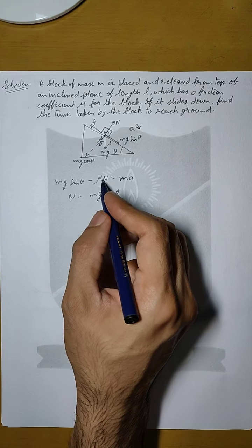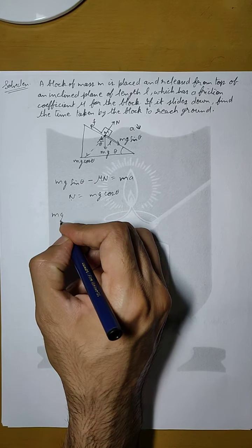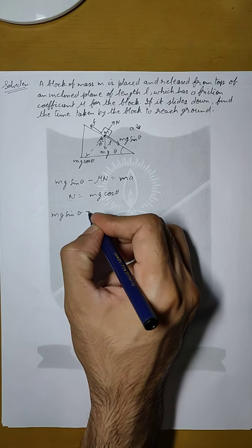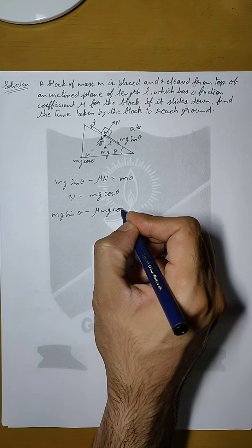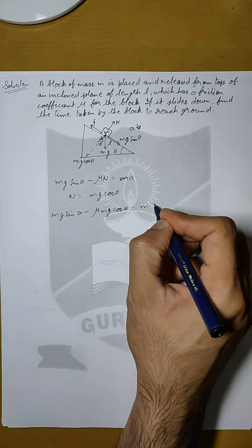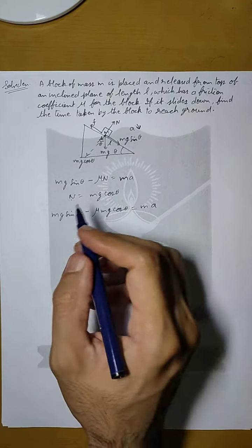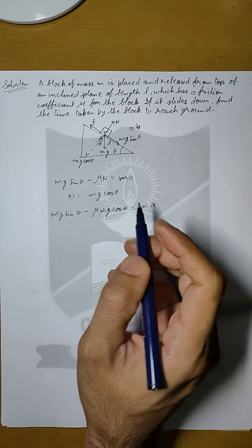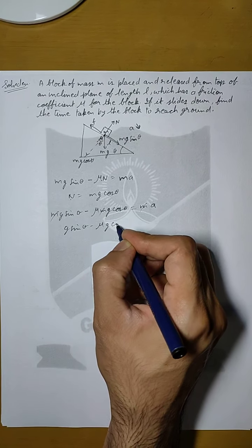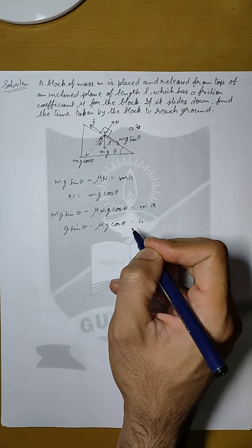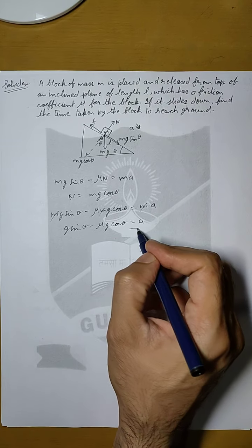So if we use this in the first equation then we get Mg sin theta minus mu Mg cos theta equals to MA. Now M gets cancelled on both sides. So we get g sin theta minus mu g cos theta equals to A. So this is the value of our acceleration.